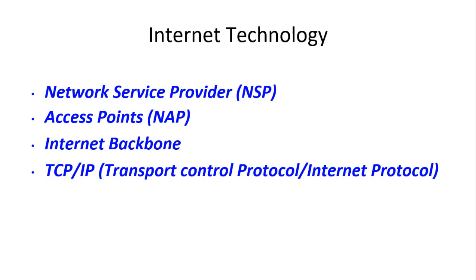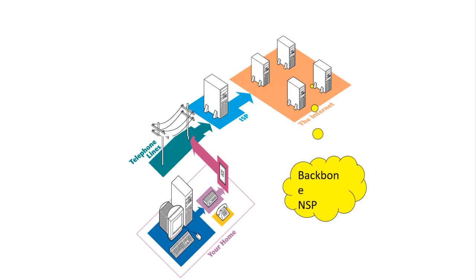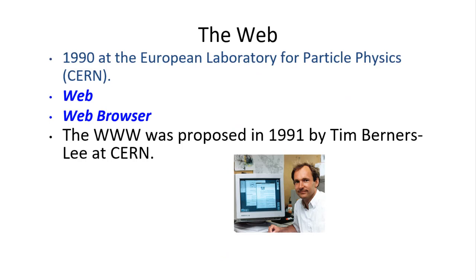The internet backbone consists of the major internet communication links. TCP/IP, the transport protocol, is the internet protocol — a standard set of communication rules used by every computer that connects to the internet. In this picture we can see the direction of response and request.